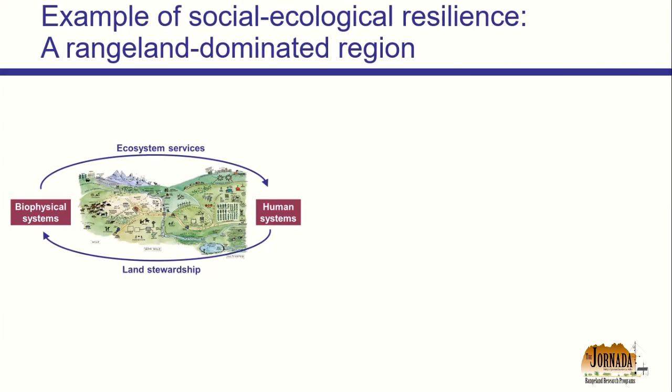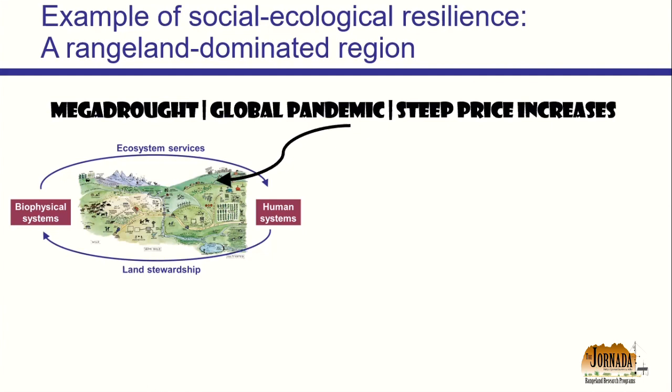Let's say over on the left here is a rangeland social ecological system and we all live in that system. We really like this system — we like how ecosystem services and land stewardship interplay with the biophysical and human systems, how the region is dominated by rangelands, and how folks can make a livelihood from those rangelands through livestock, renewable energy, or other activities. We like how the social system on rangelands is linked into the urban systems in the region.